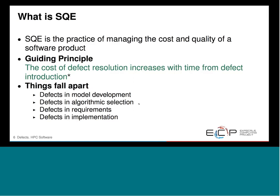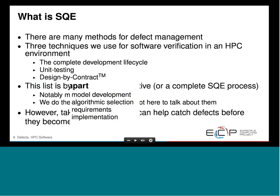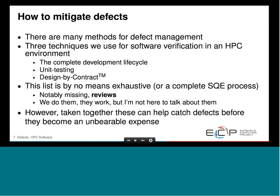In this business, things just tend to fall apart. We end up with defects in our models, defects in our algorithmic selection, defects in requirements, and defects in implementation. So how do we manage all this? How do we mitigate these defects?